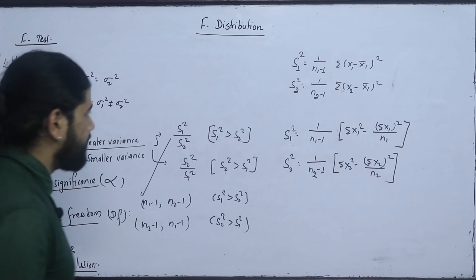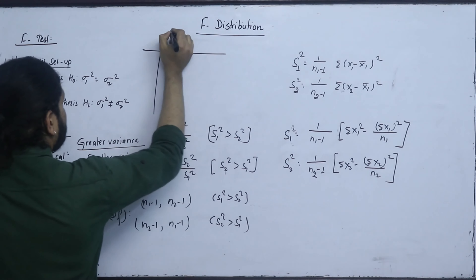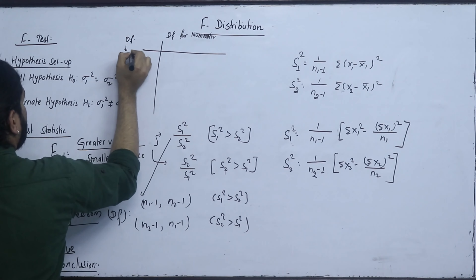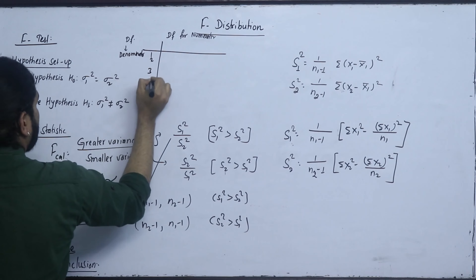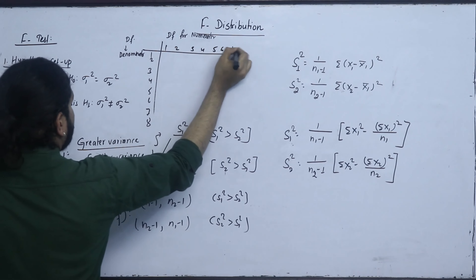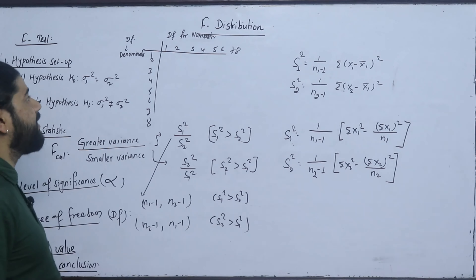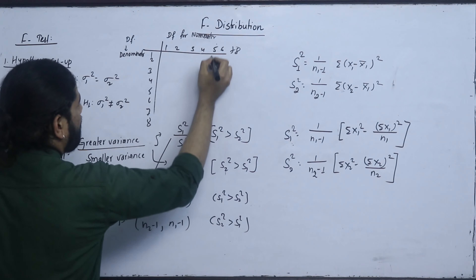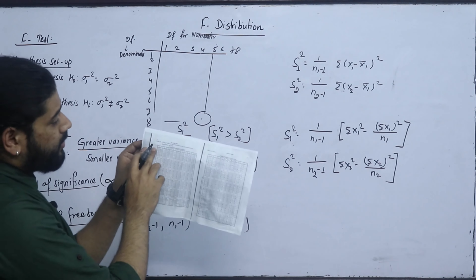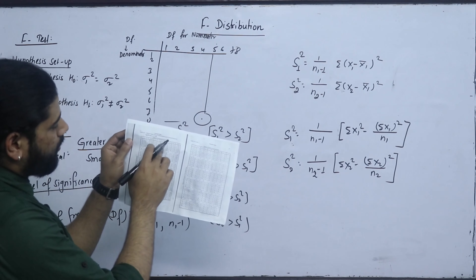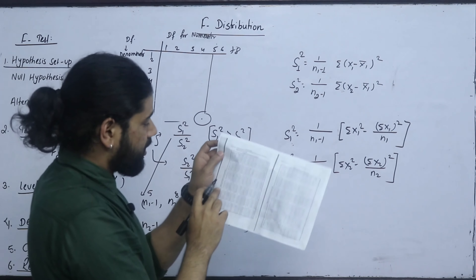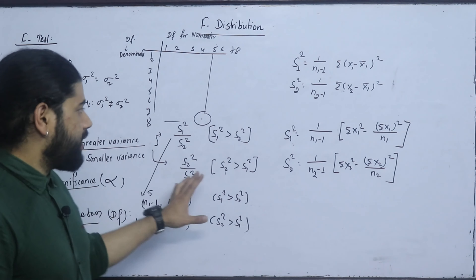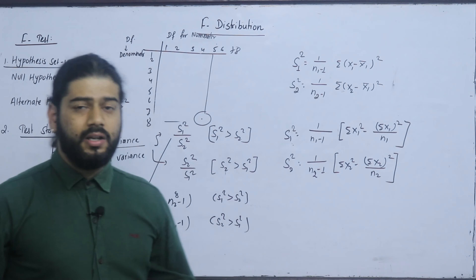Now we have to find the critical value from the F-table. The critical value in this table uses degree of freedom for the numerator and the denominator. The columns are 1, 2, 3, 4, 5, 6, 7, 8 and rows 1 through 9. Suppose the numerator degree of freedom is 5 and the denominator is 8. So we look up numerator 8 and denominator 10. The formula uses N1-1 for one and N2-1 for the other, depending on which variance S1 or S2 is greater.